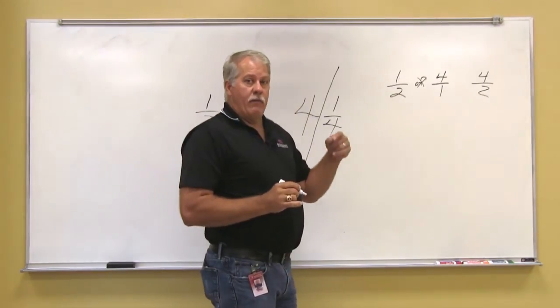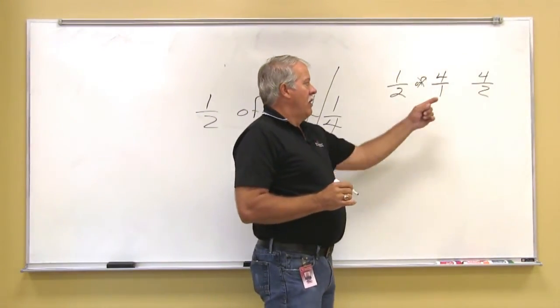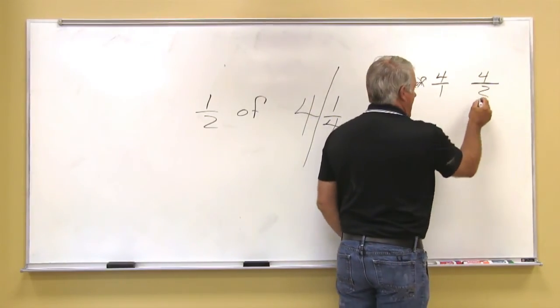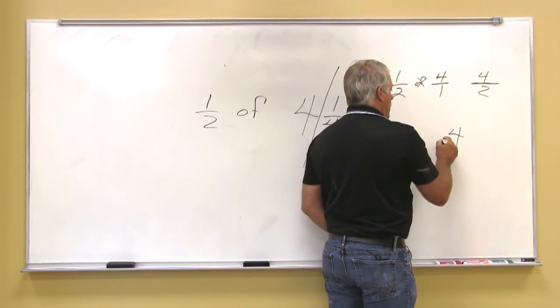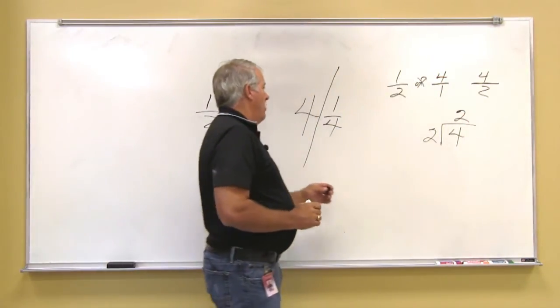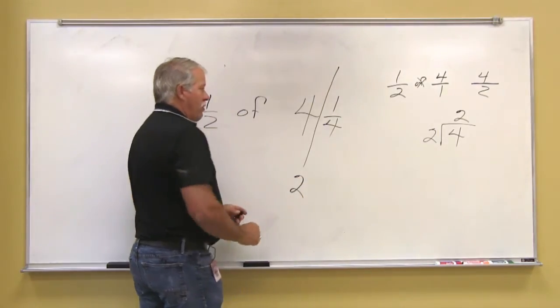We know that from the previous lesson that this is four, the line means divided by two, so four divided by two is equal to two. So the first problem was two.